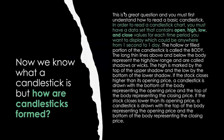How is a candlestick formed? You first must understand how to read a base candlestick. In order to read a candlestick chart, you must have a dataset that contains the open, high, low, and close for each time period you want to display — which could be anywhere from the one-second chart to the daily. The hollow or filled portion of the candlestick is called the body. The thin lines above and below represent the high-low range called shadows or wicks. The high mark is the top of the upper shadow, and the low is the bottom of the lower shadow.